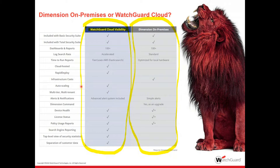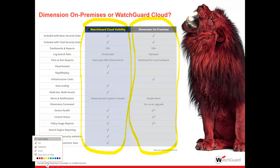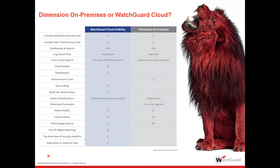Auto-scaling — as you add appliances, it just grows. Dimension, of course, is a different story. Better and more advanced alerting is included. There's also search engine reporting, which is nice — you can see if people are using popular search engines like Google or Bing and what they're actually typing in the search bar. And a nice high-level view of statistics, with customer data always segregated and separated.